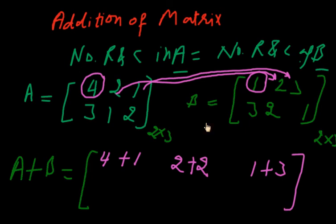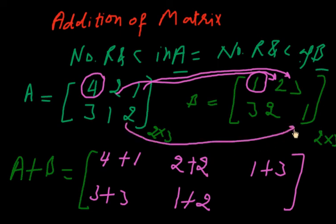Second row element will be added with second row element: 3 plus 3, 1 plus 2, 2 plus 1.